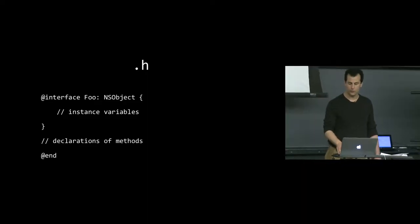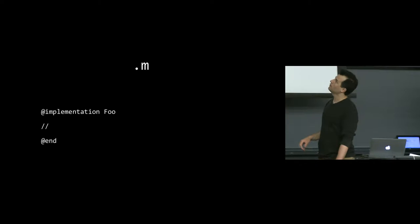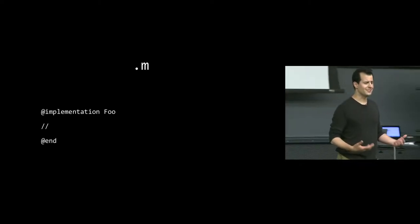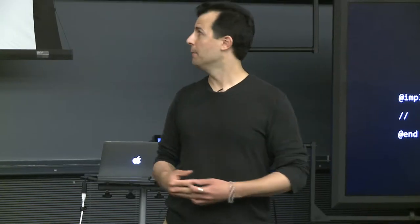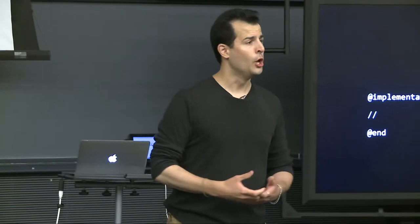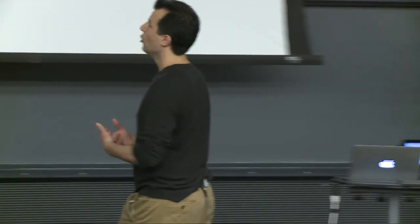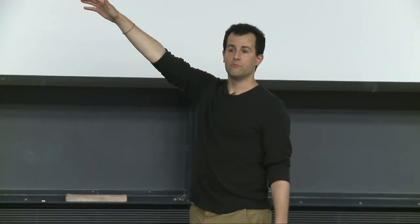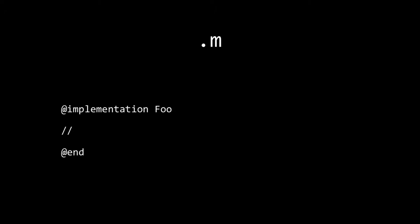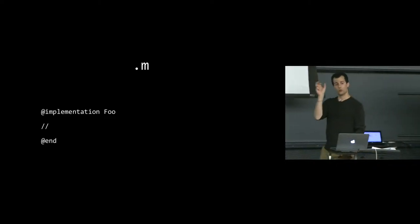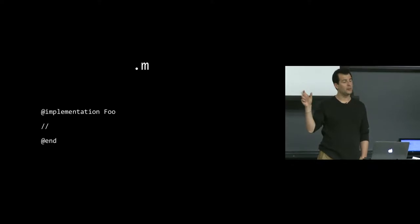.m files contain implementations. One unfortunate design decision of Objective-C: you have @implementation and then @end — asymmetric ways of starting and ending a block. Inside @implementation goes the definitions or implementations of those methods. You typically begin by copying the declaration or signature from the .h file, then open a curly brace, implement it, and close a curly brace. We'll certainly do that tonight.